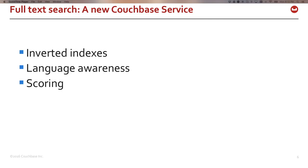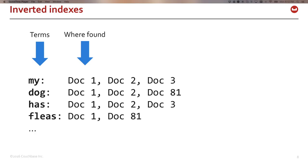An inverted index is simply a list of every term in your documents, followed by a list of documents where it was found. Later, when a query passes in some terms, the system can quickly return a list of the relevant documents.